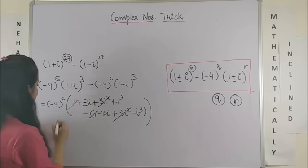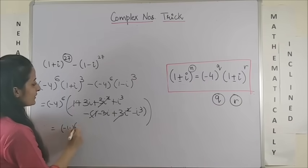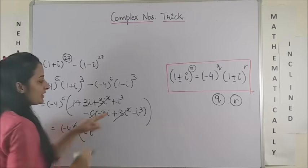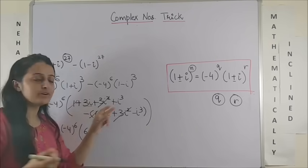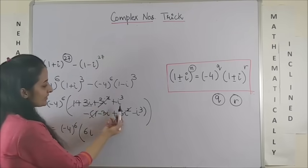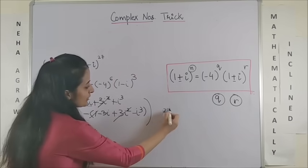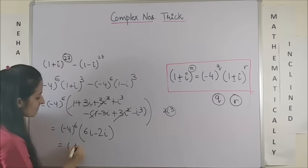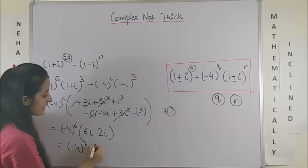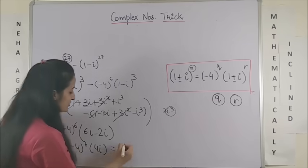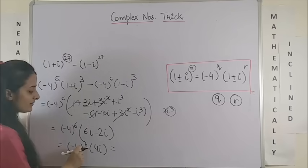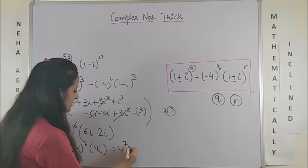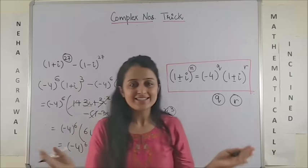So we are left with, this will be 3 iota and 3 iota, that's 6 iota. Iota cube we know is minus iota, so this is 2 iota cube. Iota cube is minus iota, so minus 2 iota. This will be minus 4 raised to power 6 into 4 iota, which is minus 1 raised to power 6 would be 1 only. So this will be 4 raised to power 7 iota.